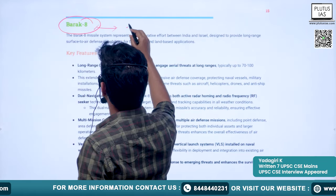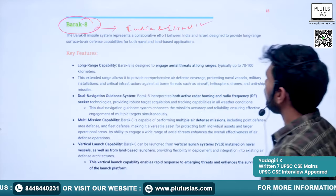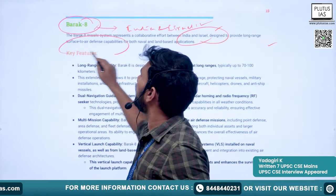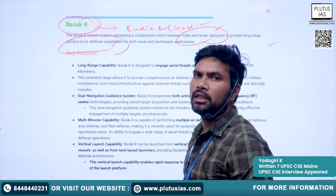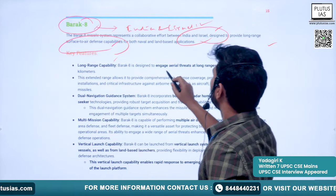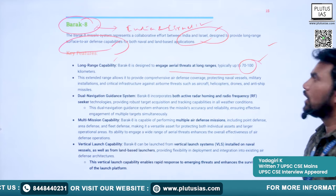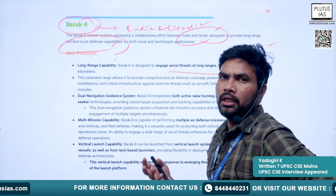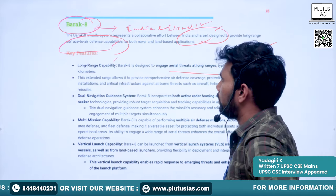Barak-8 is the outcome of collaboration between India and Israel. It is a long-range surface-to-air missile system designed to engage aerial targets at ranges of 70 to 100 kilometers. This complements Akash, which defends medium-range targets; Barak-8 defends against long-range aerial threats.